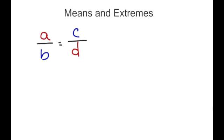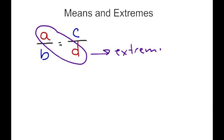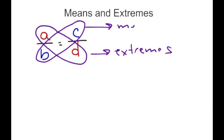Now let's talk about means and extremes. Whenever you have a proportion, it looks like A over B equals C over D. The A and D are your extremes, and B and C are your means. All this says is that the product of your extremes — A times D — has to be equivalent to the product of your means, which is B times C.